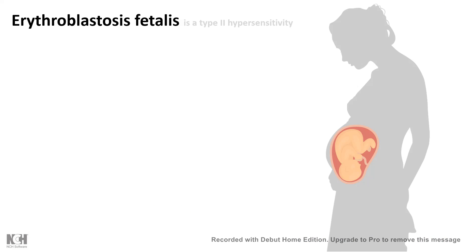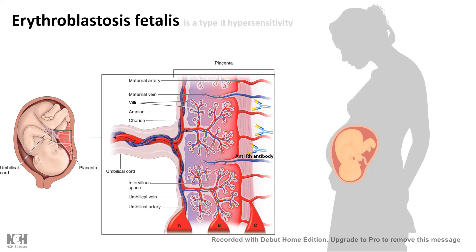There is also a situation especially in newborns known as erythroblastosis fetalis, which is a consequence of type 2 hypersensitivity. In this case, anti-Rh antibodies travel from the mother's blood to the developing baby and destroy it via several mechanisms. Let's look at this process in a little more detail.